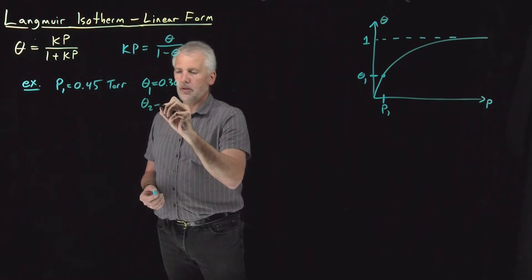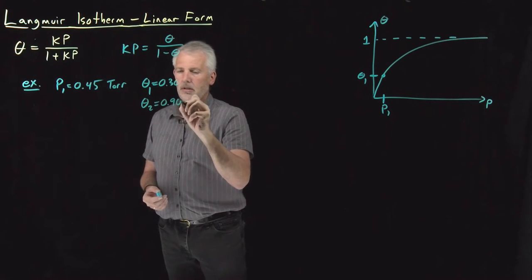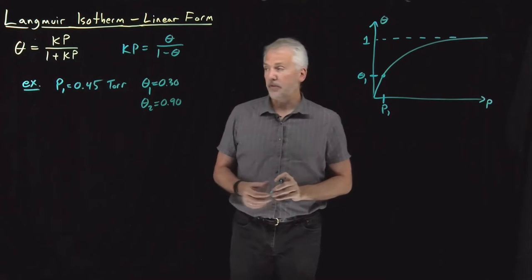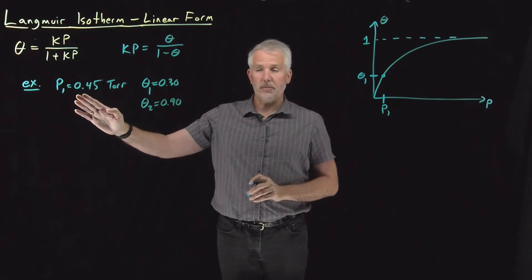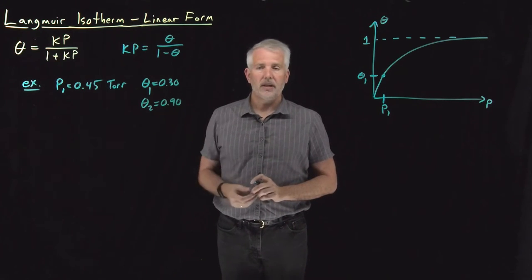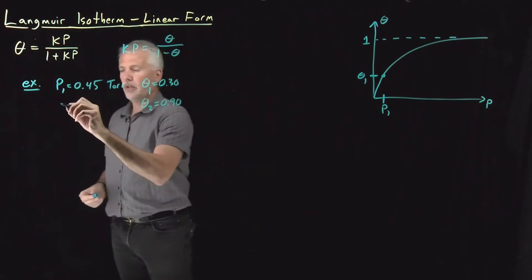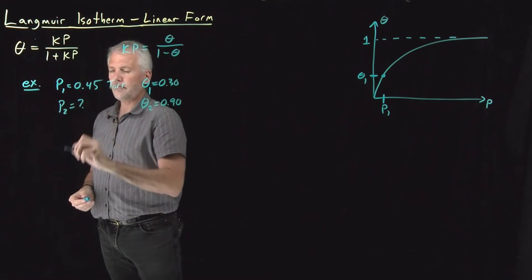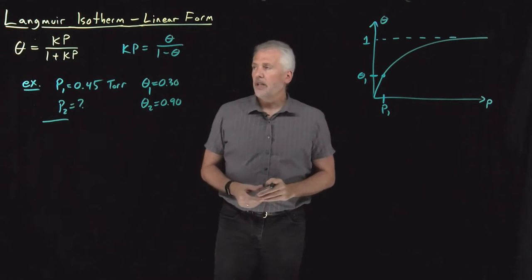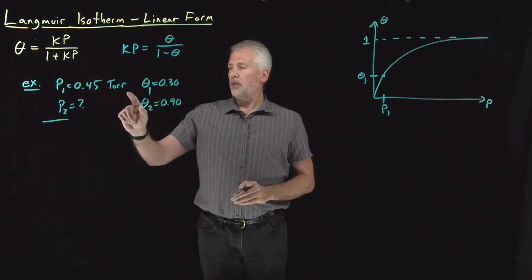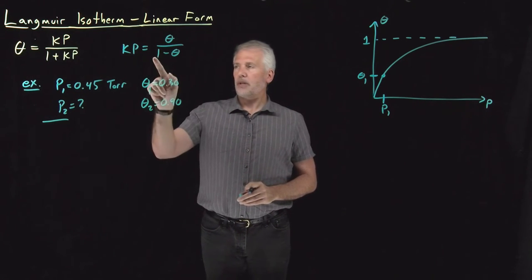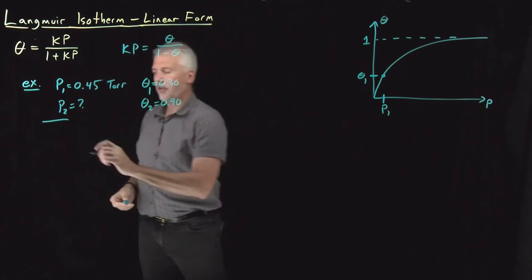And then the question is, if we want to, let's say, cover 90% of the surface, what would we need to increase the pressure to to make sure we covered 90% of the surface? So what would p2 be?